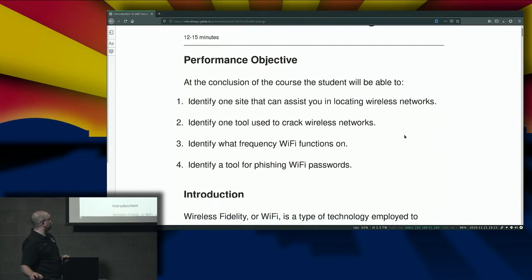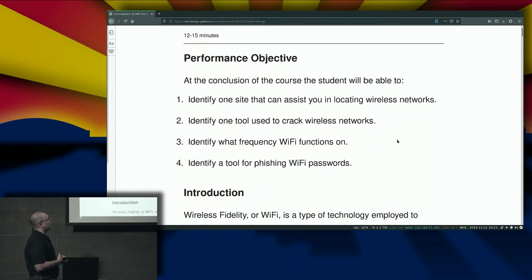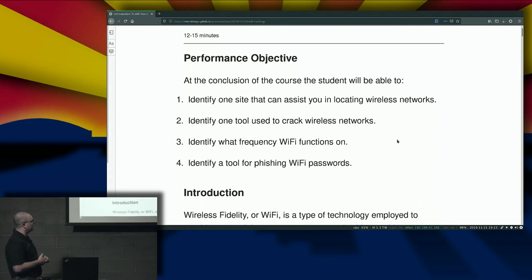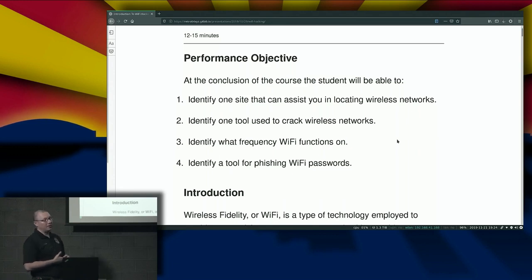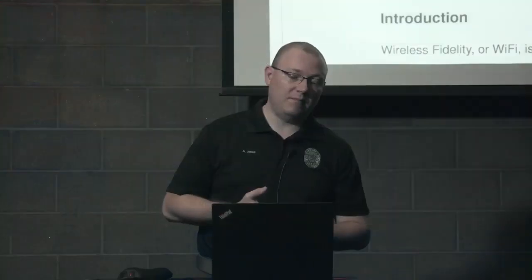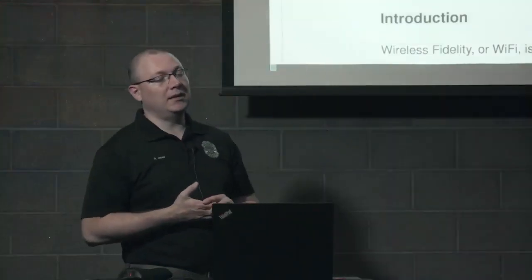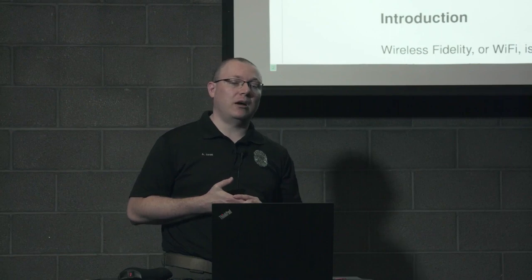Our performance objectives will include identifying at least one site that can assist you in locating wireless networks, identifying at least one tool used to crack wireless networks, identifying what frequencies Wi-Fi functions on, discussing information related to Wi-Fi in detail, and identifying a tool for phishing Wi-Fi passwords — which is probably one of the more effective methods for getting people's information when you are out and about.